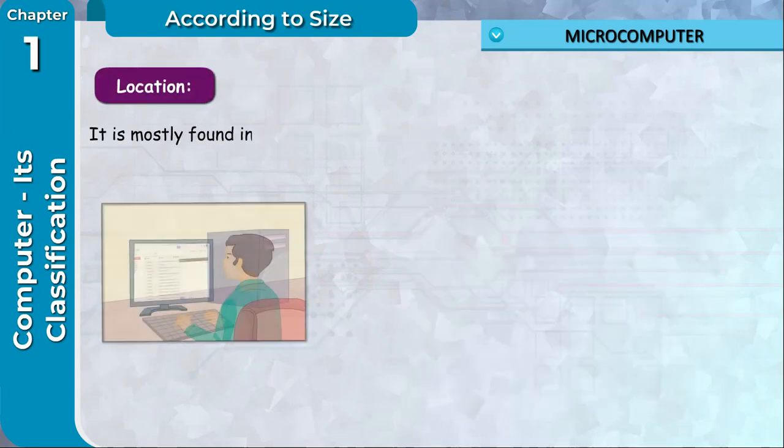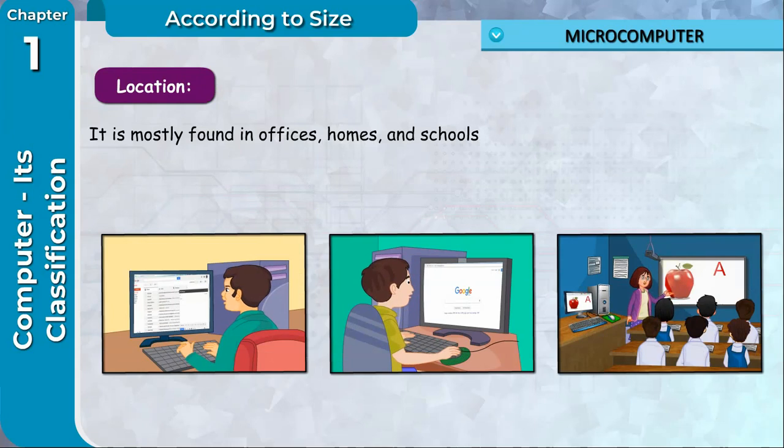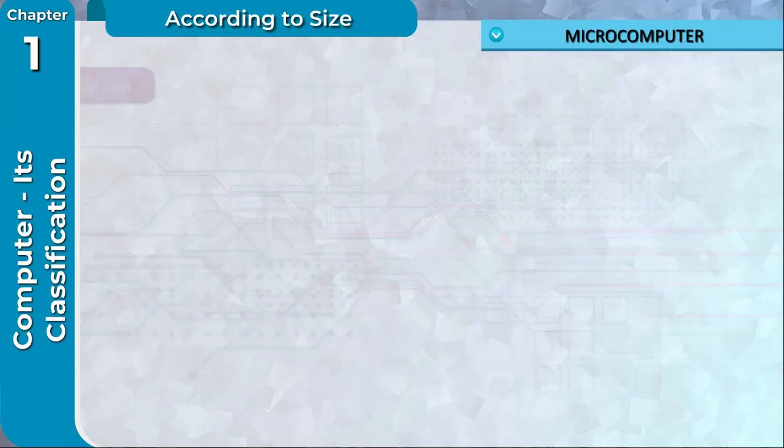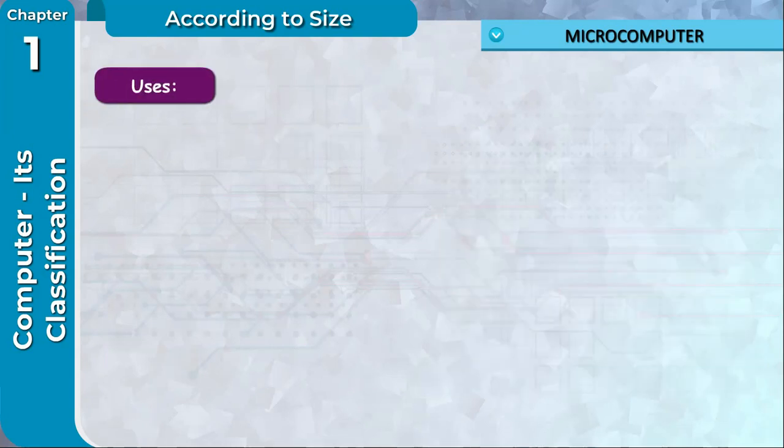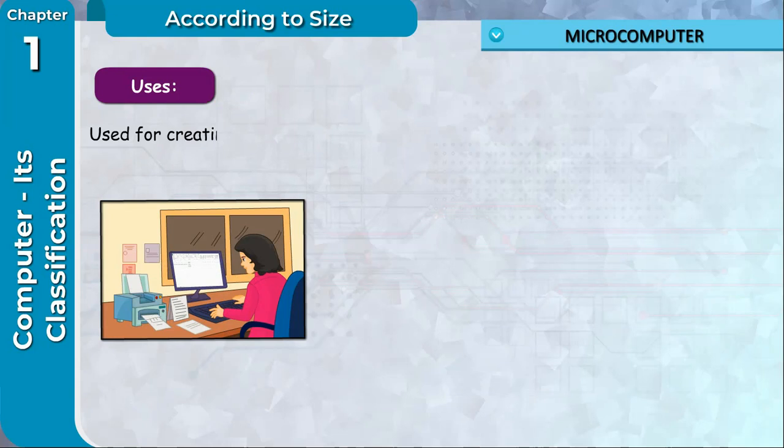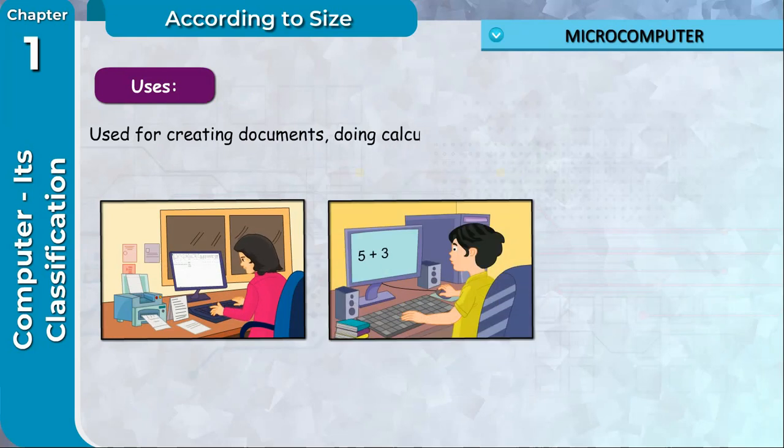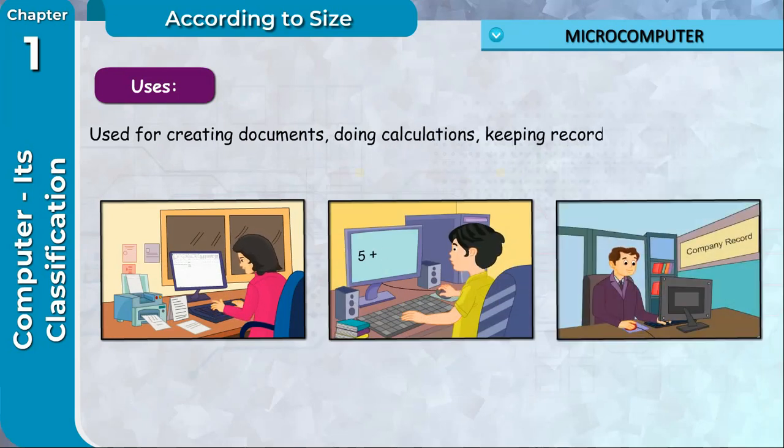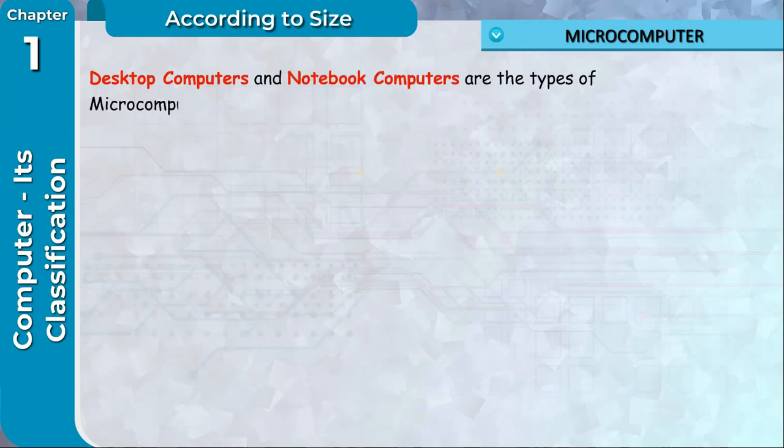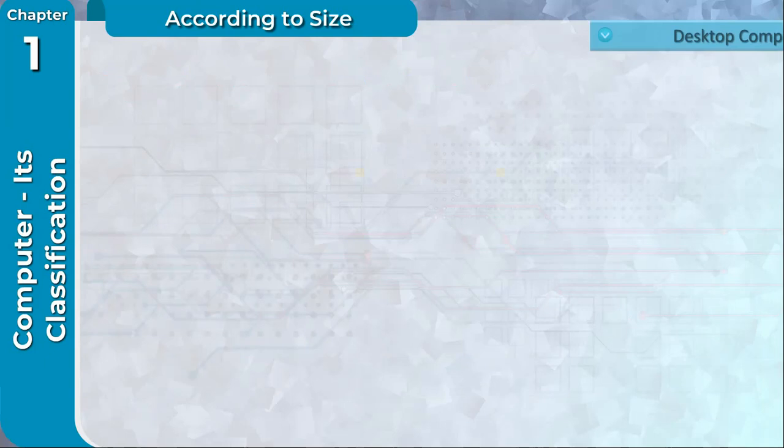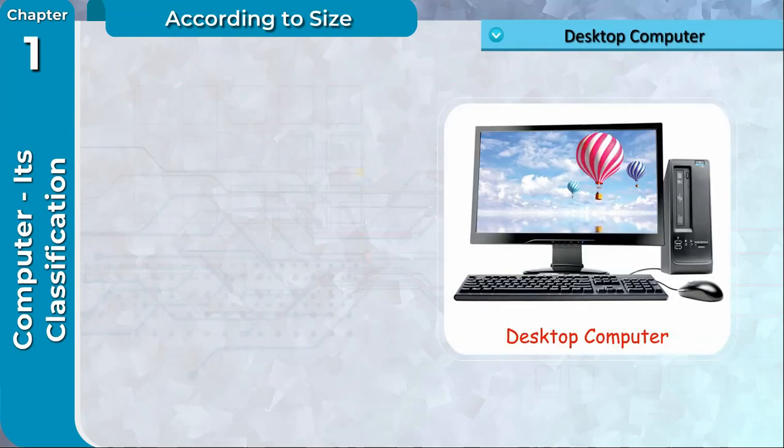It is designed to be small enough to use by a single person. Location: It is mostly found in offices, homes and schools. Speed of a microcomputer is increasing day by day. Uses: Used for creating documents, doing calculations, keeping records, etc. Desktop computers and notebook computers are the types of microcomputer.